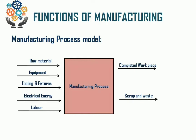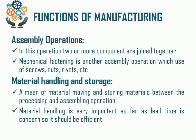The next function of manufacturing is the assembly operation, in which the operation is performed for joining two or more components together with the help of mechanical fastening or other assembly operations using screws, nuts, and rivets. The assembly operation is an integration of a number of components to develop a finished product.